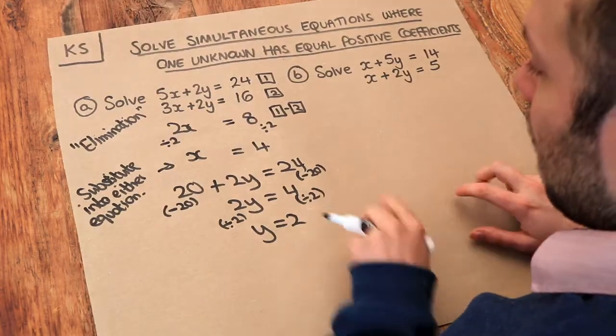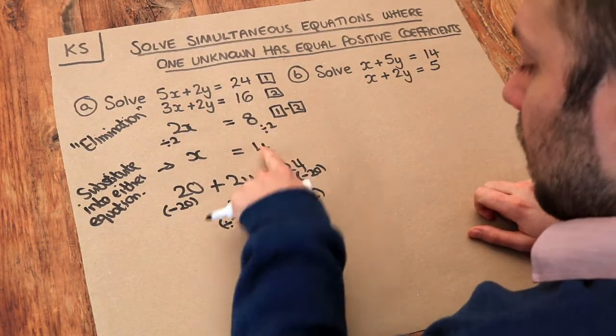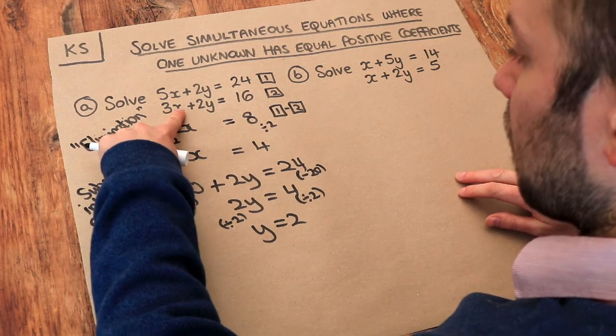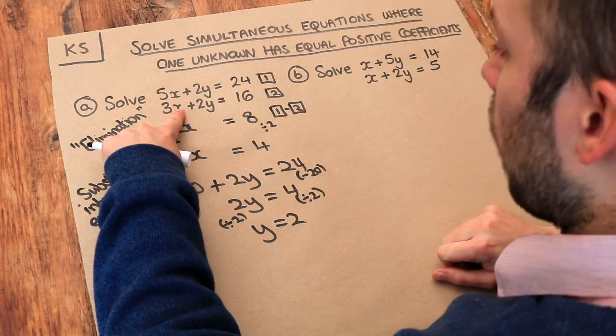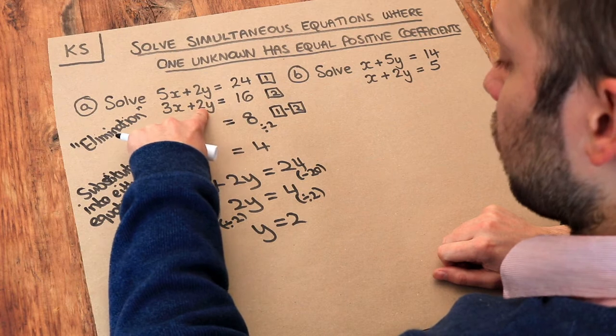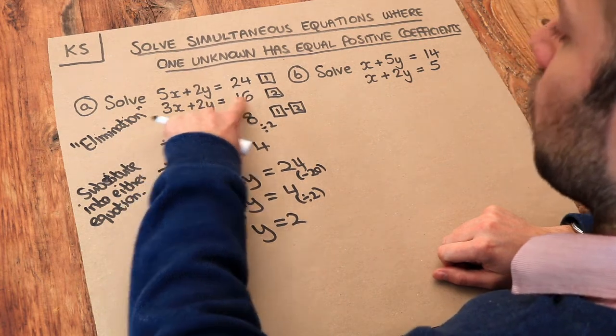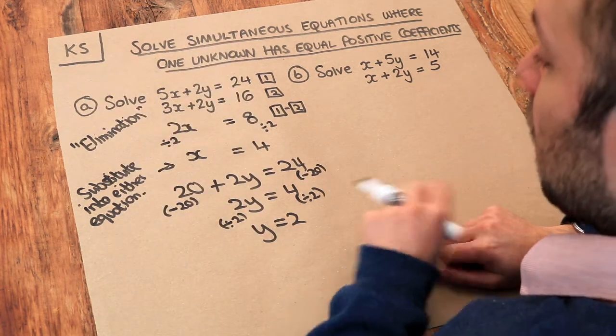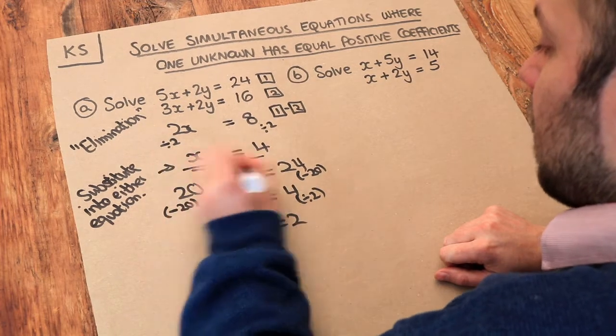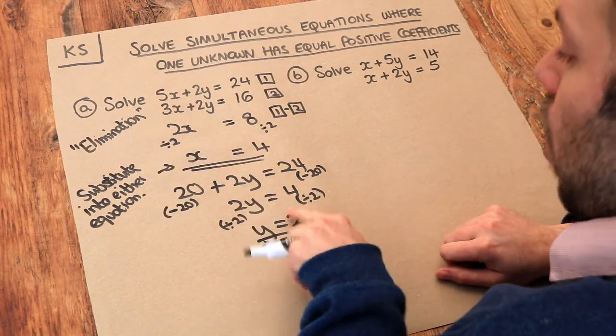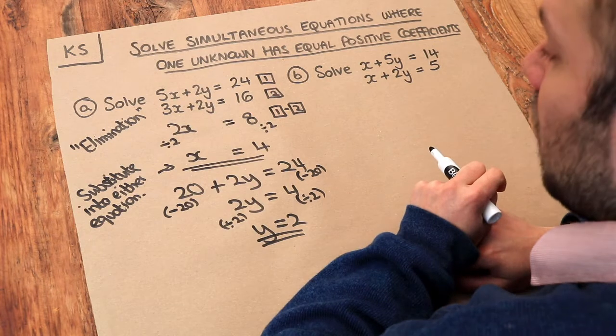Now let's just check that with the second equation if x is 4 and y is 2. Well 3 times 4 is 12. 12 plus 2 times 2, 12 plus 4 is 16. So that works. So this value of x and this value of y works in both of these equations.